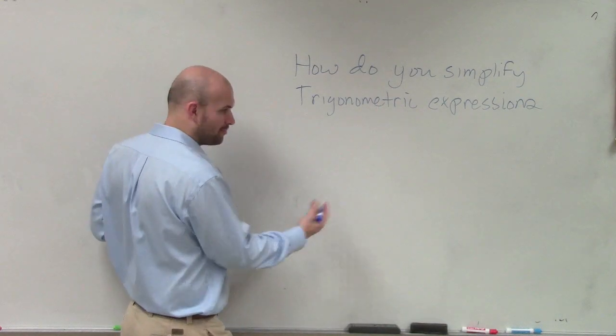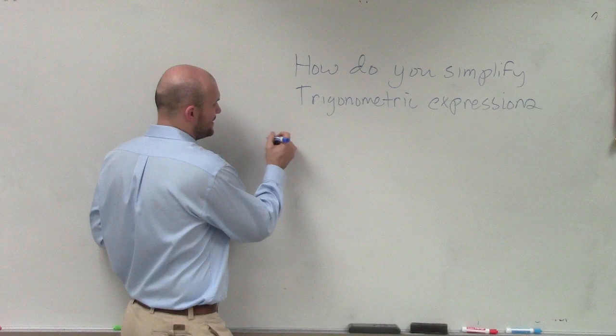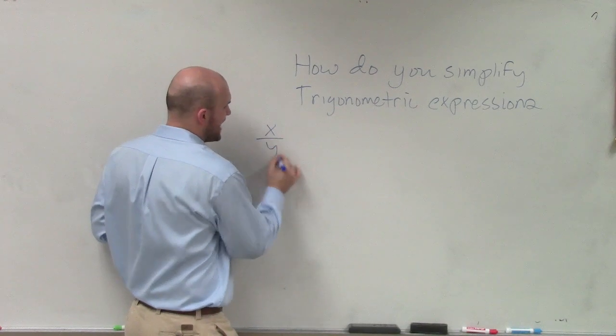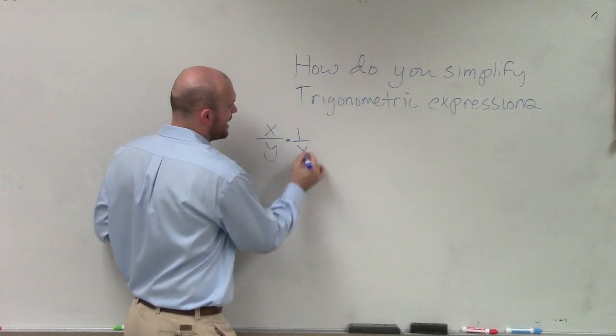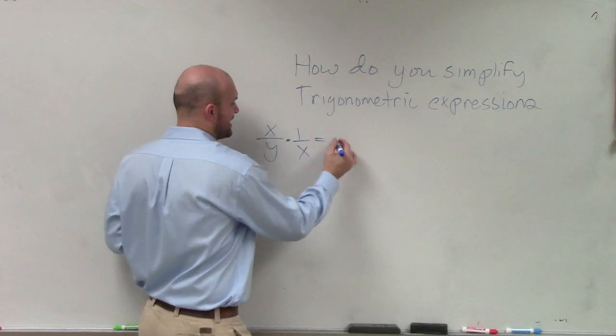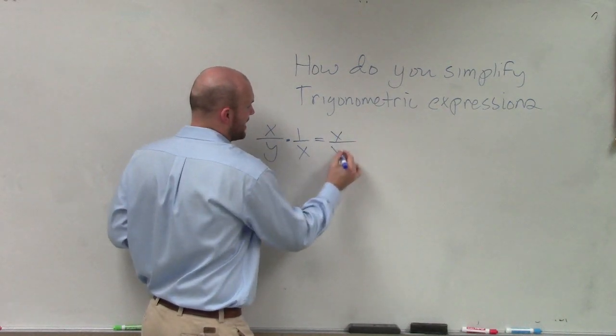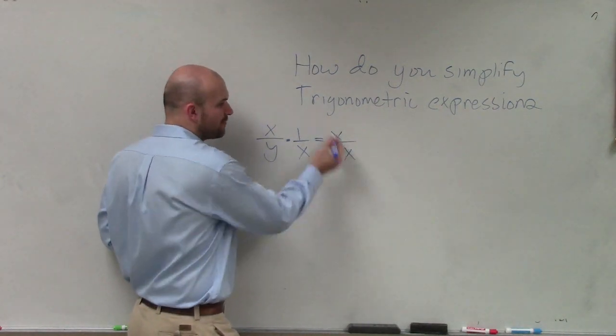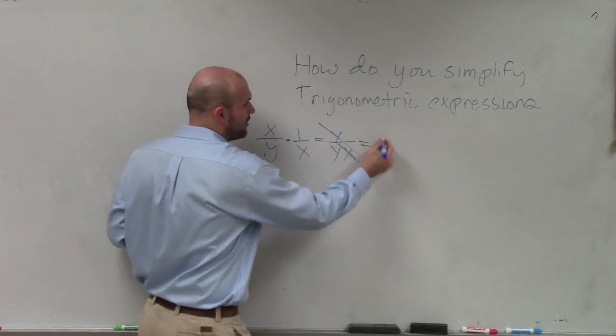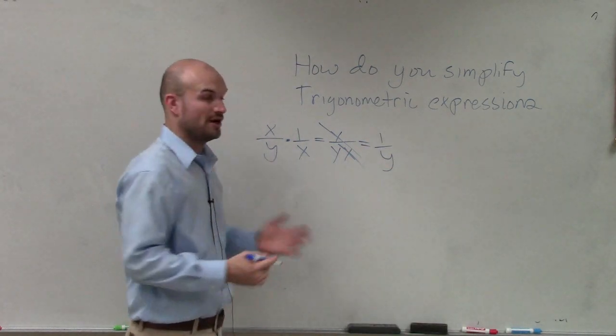The first one is our reciprocal property. You know, if we have x over y times 1 over x, remember we can rewrite that as x divided by y over x. Therefore, the x's are now going to divide to 1, and I'm just left with 1 over y.